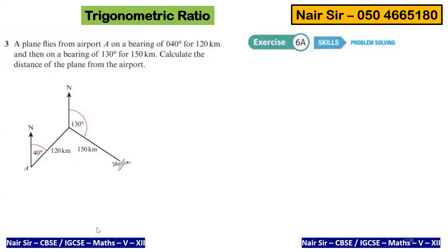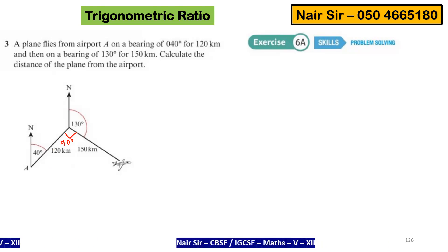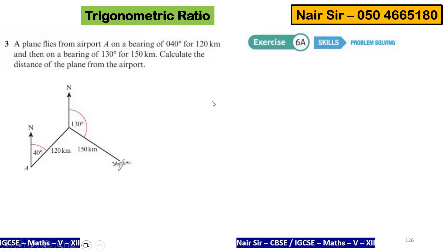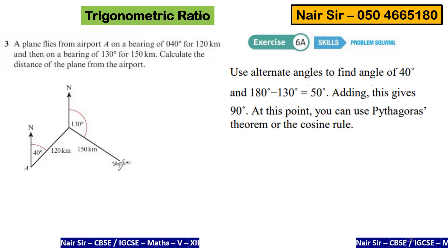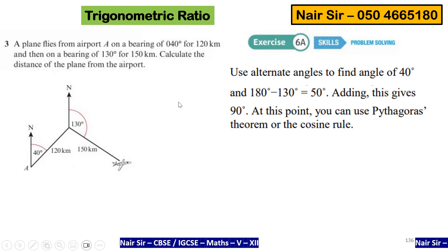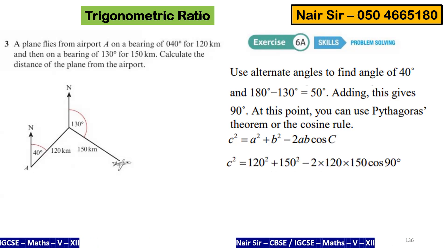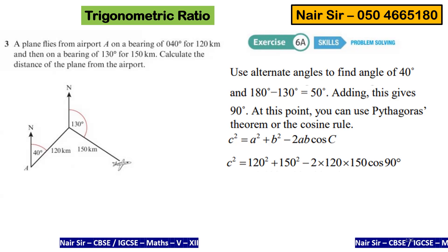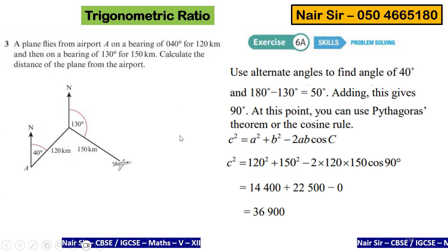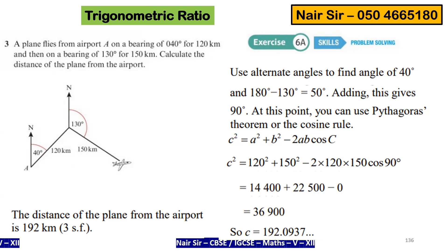Now let us look at the solution. Using alternate angles, I get this angle as 90 degrees. I can use Pythagoras or the cosine rule — let me use the cosine rule. The cosine rule states: C² = A² + B² − 2AB cos C. If I substitute cos of 90, which equals zero, that term becomes zero. The distance of the plane from the airport is 192 kilometers, to three significant figures.